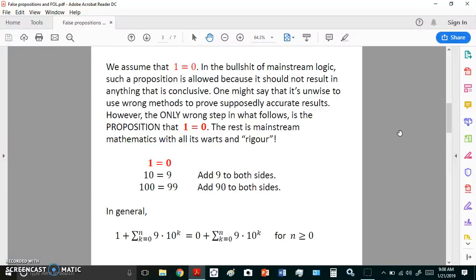One might say that it's unwise to prove supposedly accurate results, but 0.999 dot dot dot equals 1 is not a theorem, it's not a result. However, the only wrong step in what follows is the proposition 1 equals 0. The rest is mathematically correct. So, we're only going to assume, right over here, that 1 is equal to 0, and in everything else that follows, mathematically, we're going to use the correct steps.